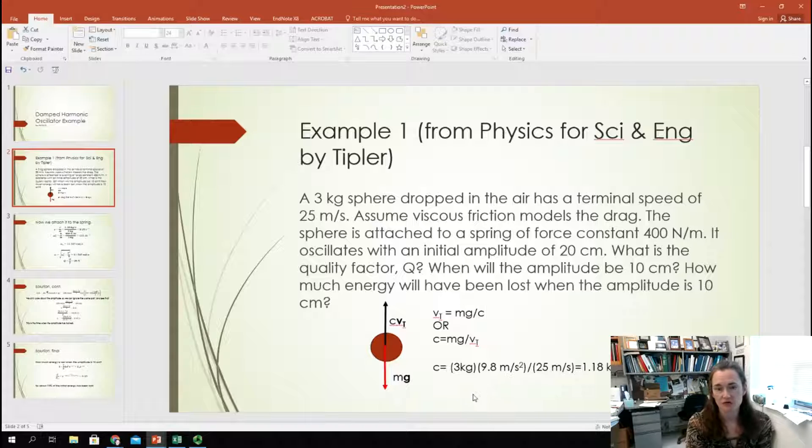Now, plugging in for the mass of three kilograms, the acceleration due to gravity of 9.8 meters per second squared, and the terminal velocity of 25 meters per second, I end up with a drag coefficient of 1.18 kilograms per second. Okay? So, now I can use that drag coefficient and calculate the quality factor and some other important things that I need for the rest of the problem.